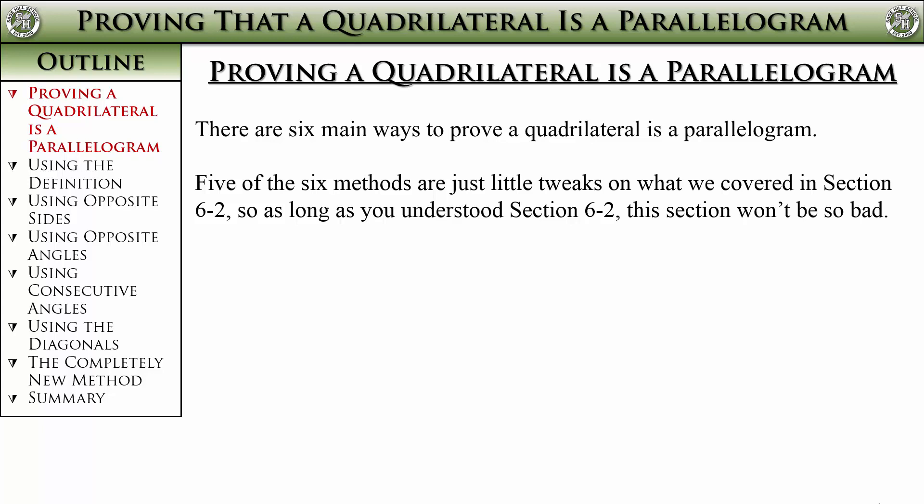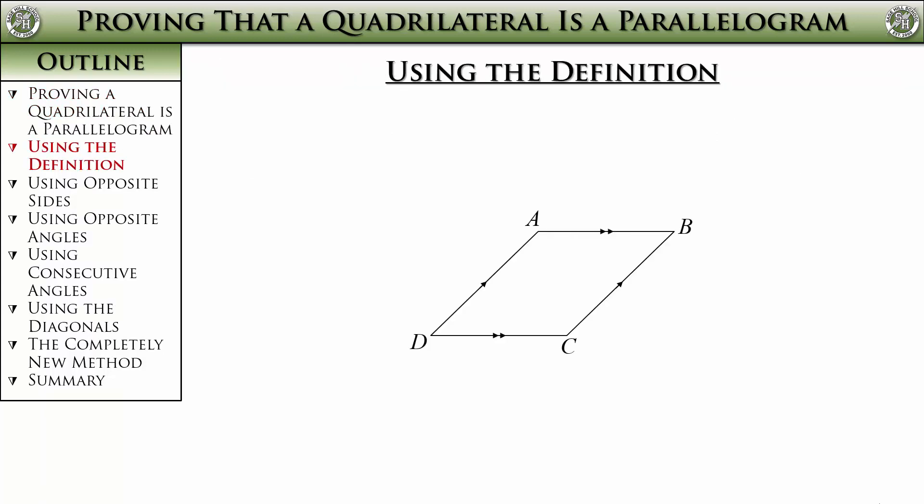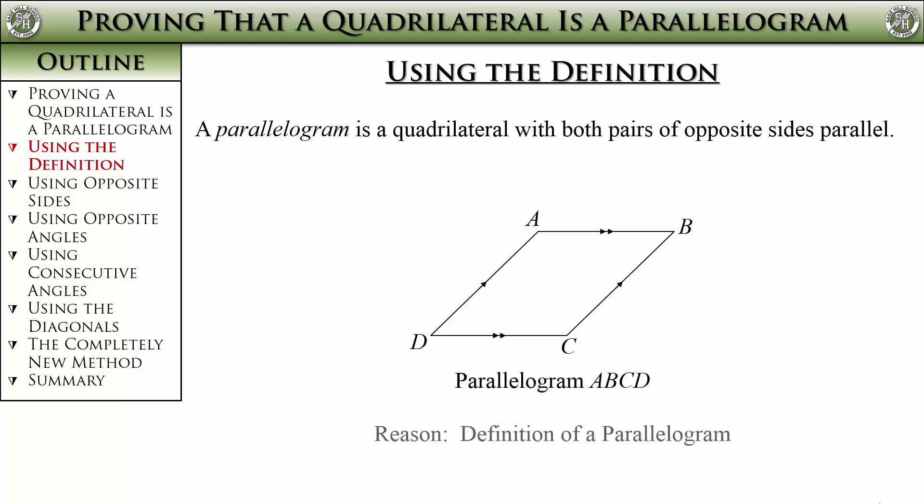In fact, it will go pretty quickly. The first method simply uses the definition. This was the definition of a parallelogram. If you get to a point where you can show that both of the opposite sides are parallel, then you can definitely prove the quadrilateral is a parallelogram. The reason you put in a proof is that it is the definition of a parallelogram. Simple right?